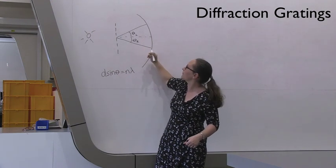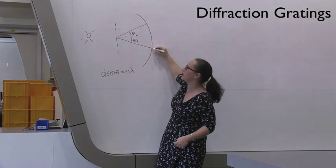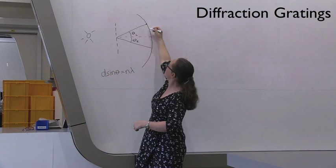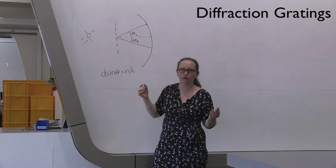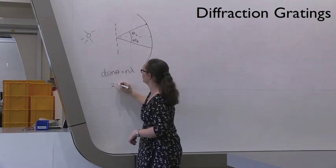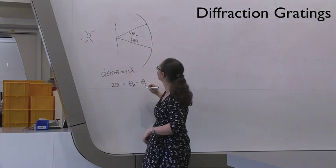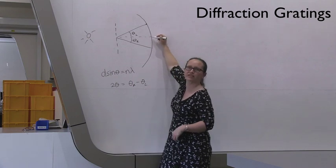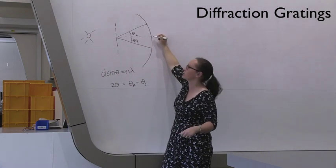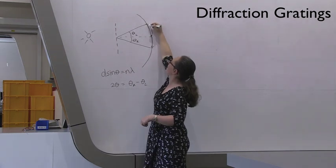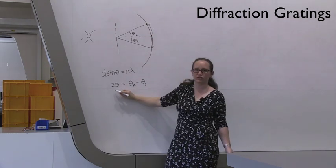In order to measure theta, we can measure the angle between these two first order maximums. So this angle is actually two theta, and so we've got two theta is equal to theta r minus theta l, assuming that zero degrees is not in the middle here. If zero degrees is in the middle, you're going to have to add that angle and that angle to end up with two theta.